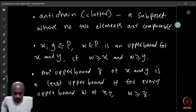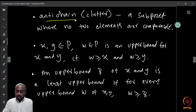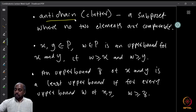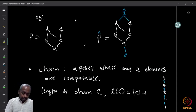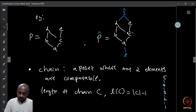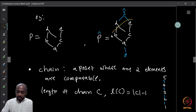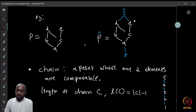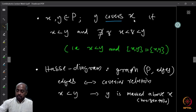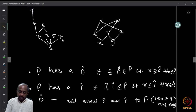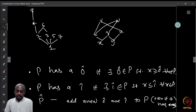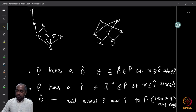An anti-chain, also called a clutter, is a sub-poset where no two elements are comparable. For example, {b, c} or {b, e} from the example poset form anti-chains. In the divisibility poset, {2, 3, 5, 7} form an anti-chain, as do {5, 4}, and {7, 8}.